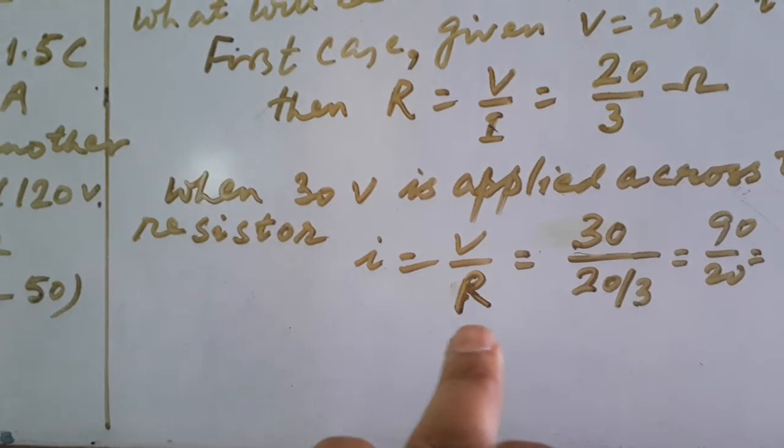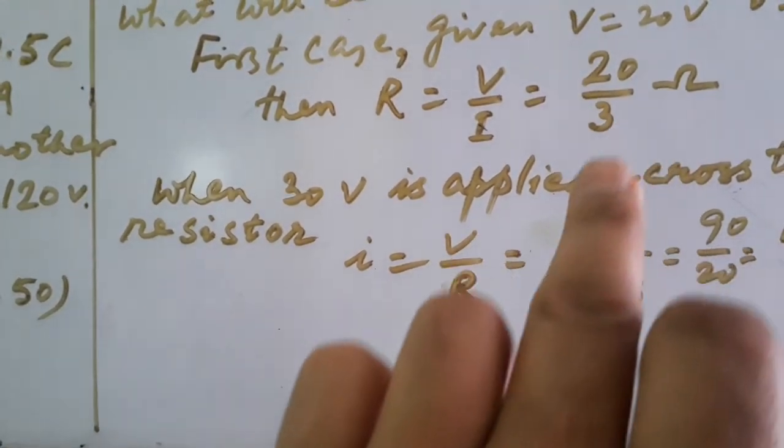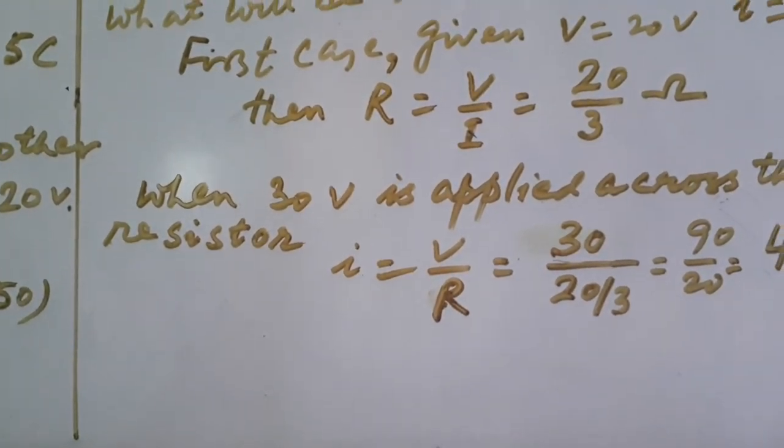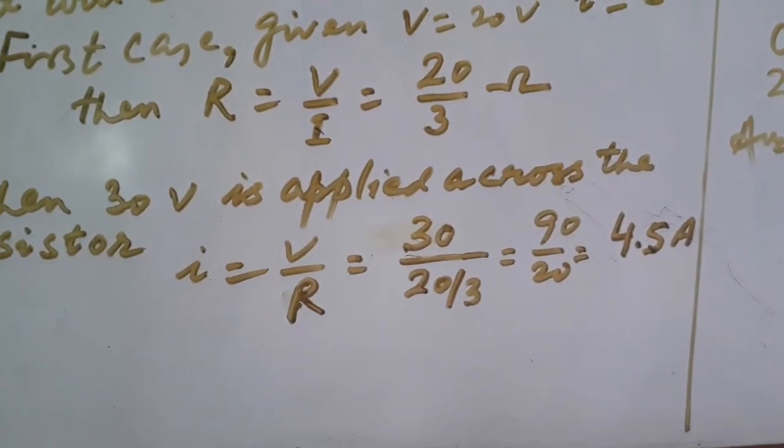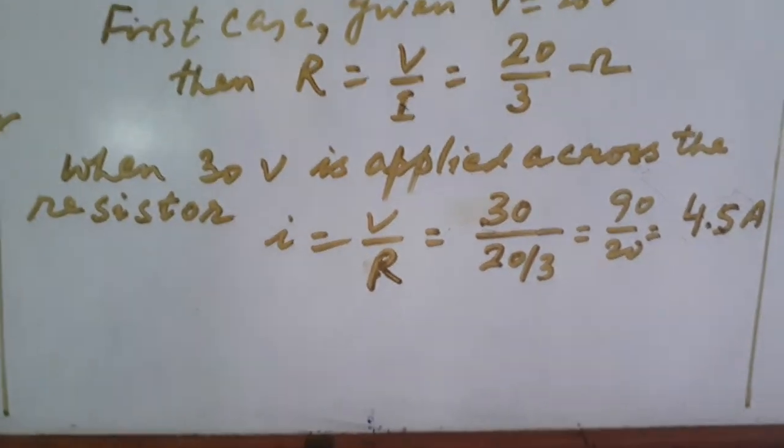V is given, 30 and R is already calculated. Put the values of V and R, you will get current as 4.5 ampere, this is the answer.